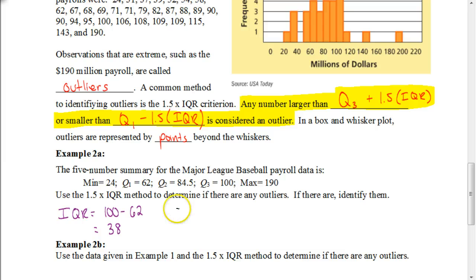Now we're going to take one and a half times 38, because that's our one and a half times IQR criterion. When you do that, you get an answer of 57.